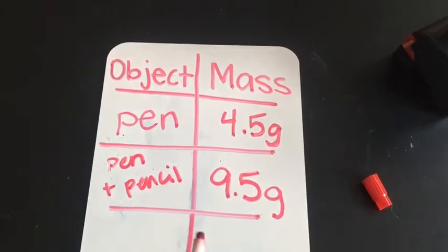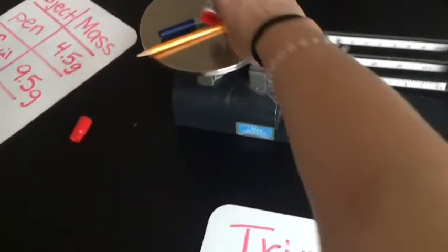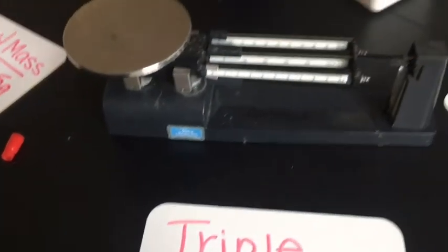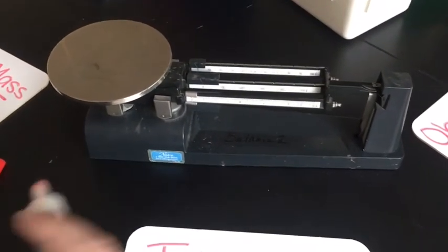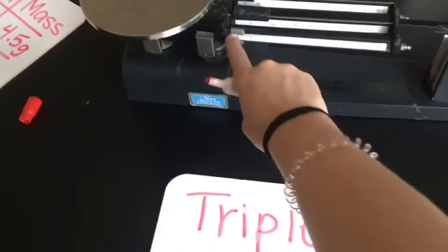Now I want you to try placing your own objects on here. Let's take the pen and the pencil off, pick your own objects to measure the mass of, and balance it out. See how many objects you can get done before the station is complete.